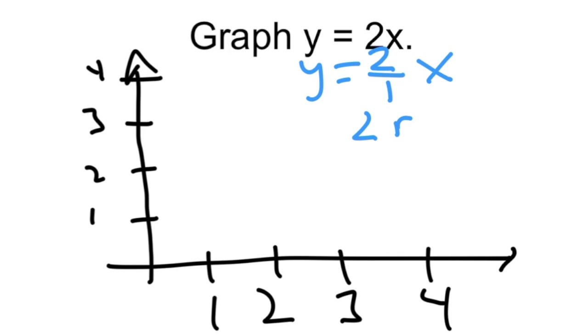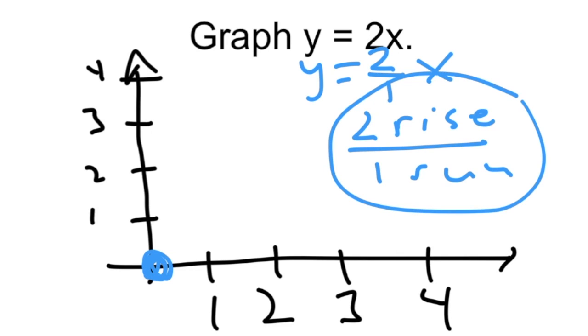So our rise is 2. Our run is 1. And because it's a proportional relationship, it has to go through the origin. And then from there, we use our slope. We rise 2 and we go over 1. And that's our new point. We can even do it again. Rise 2 over 1. And then we have a new point. Draw your line. And we have just graphed it without making a table. Thank you.